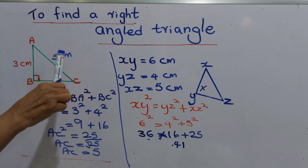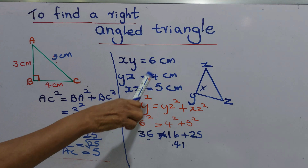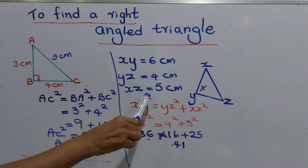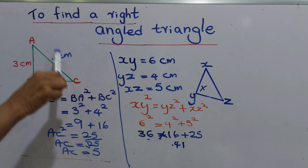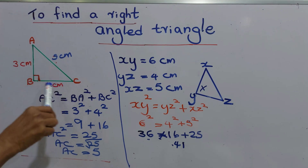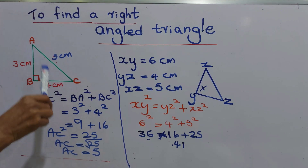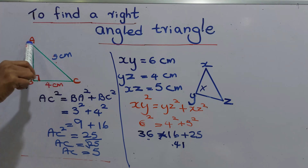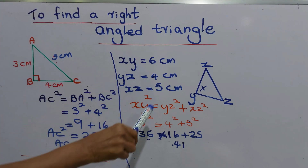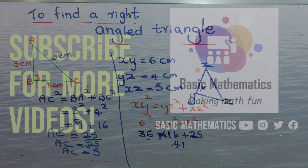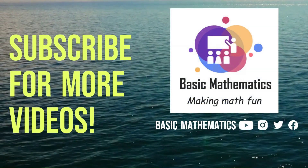So the Pythagoras relationship is used to find whether a given triangle is a right angle triangle or not, and also to find an unknown side of a right angle triangle. In this example it is a right angle triangle, so we can find the value of AC. In the earlier example, that was not a right angle triangle.